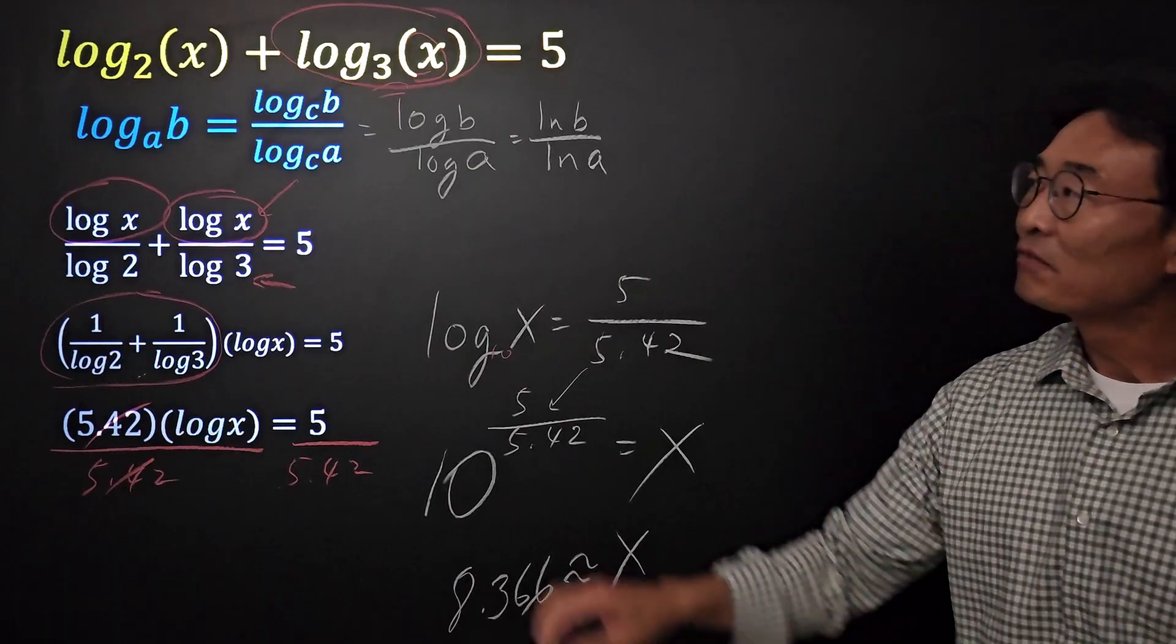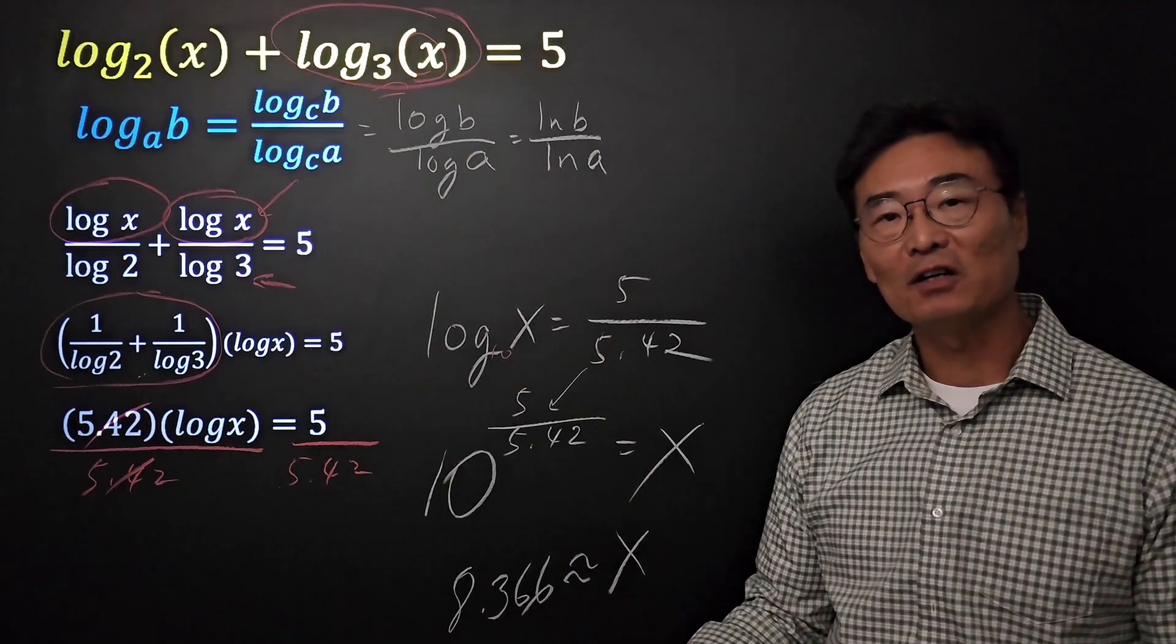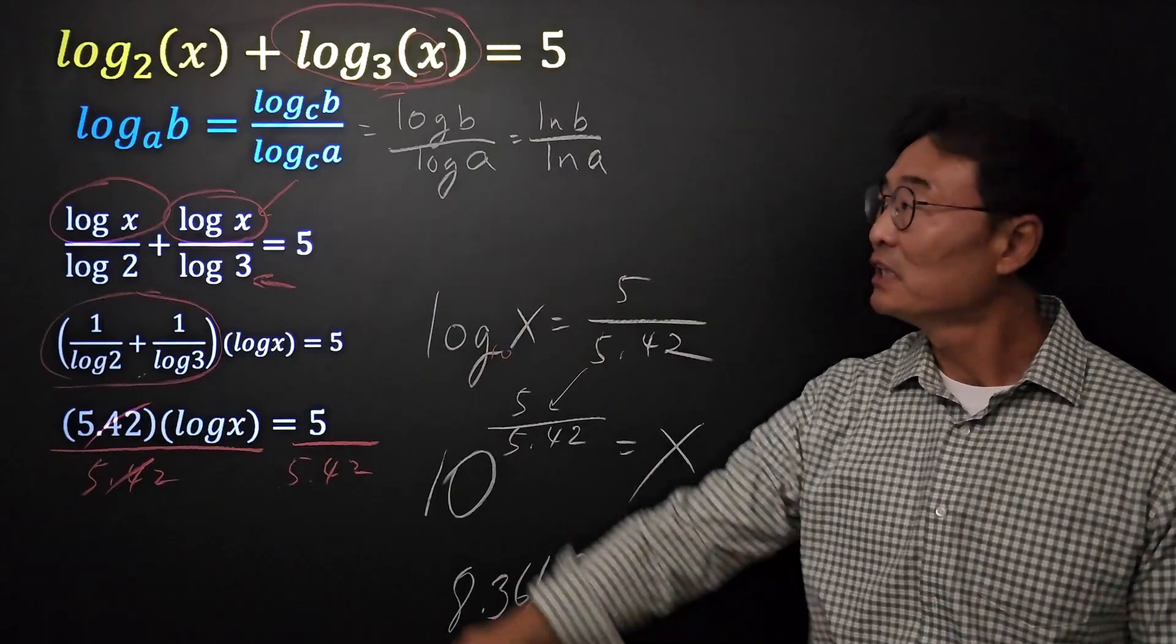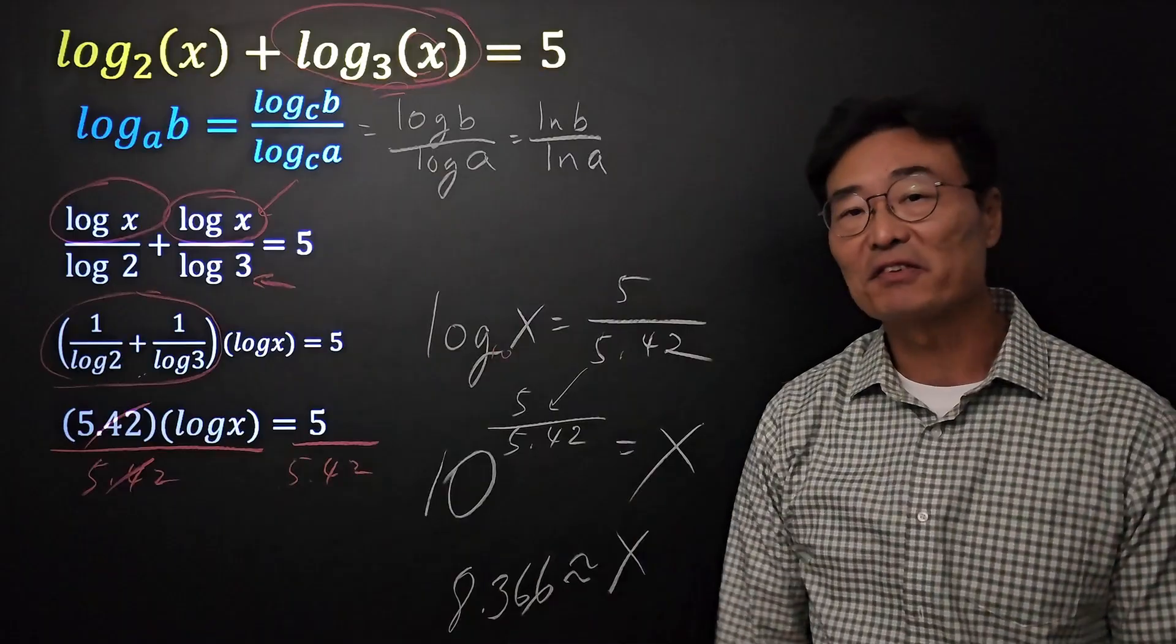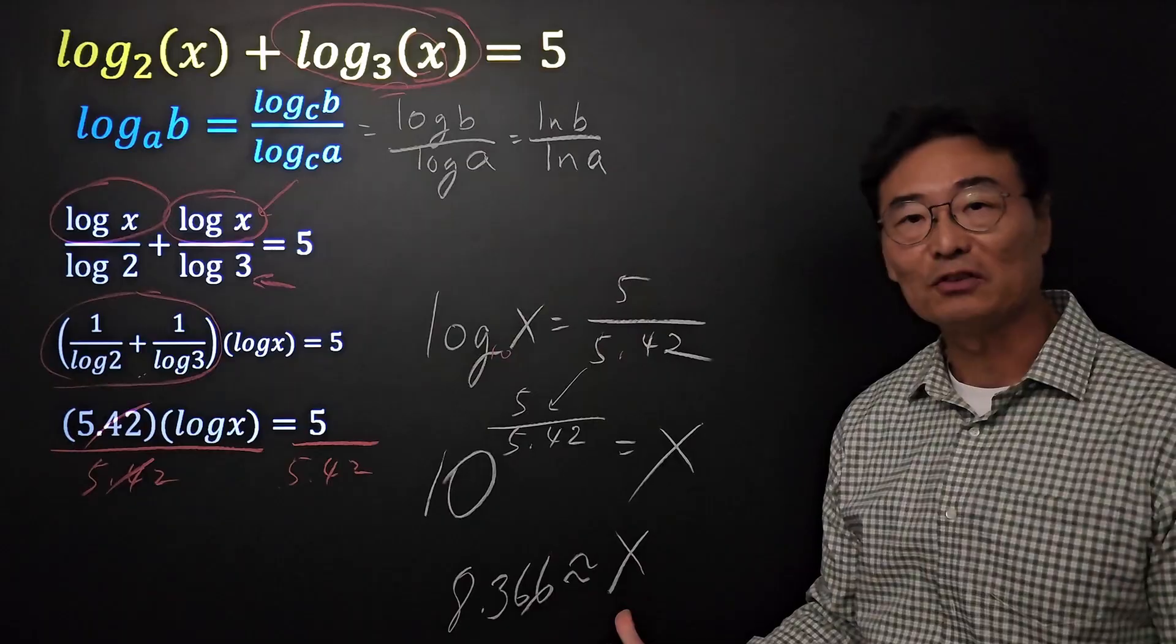So again, if the bases are same, it's not that bad. You're able to combine the two logs and then change it into an exponential equation. However, when the bases are different, you have to go ahead and use the change of base theorem and go through some extra process to solve for the value of x.